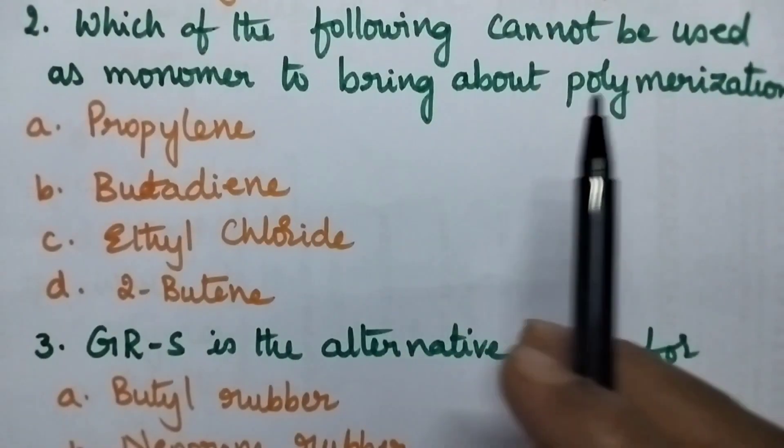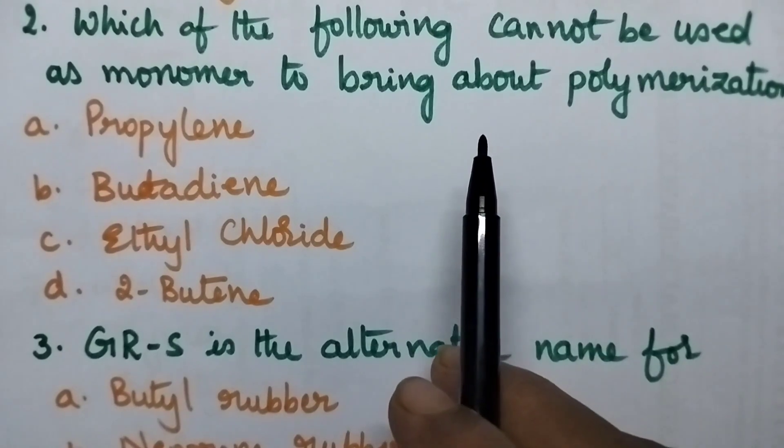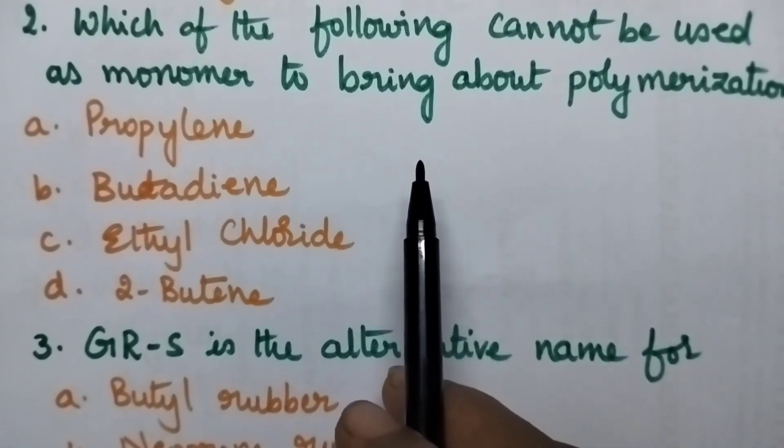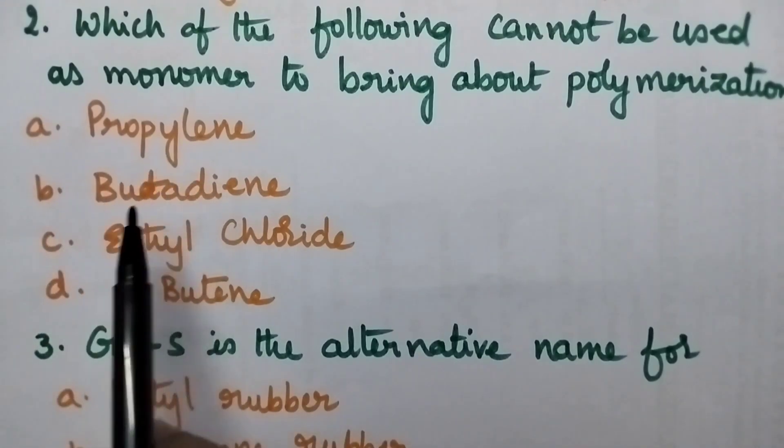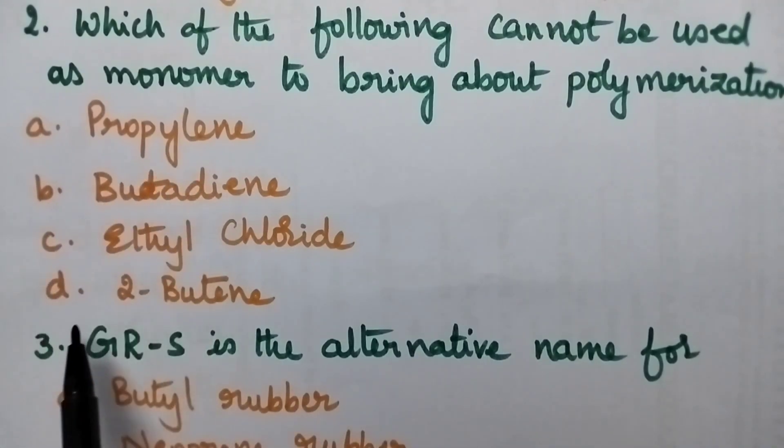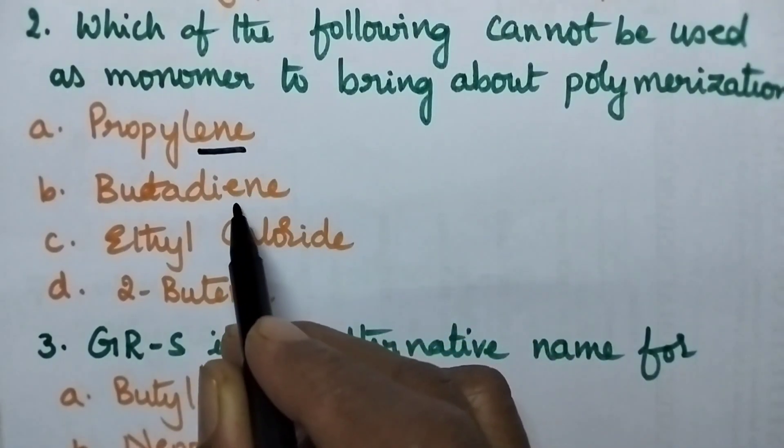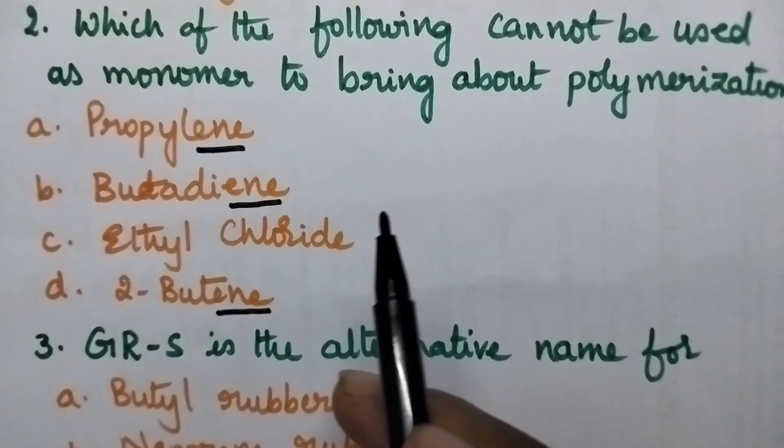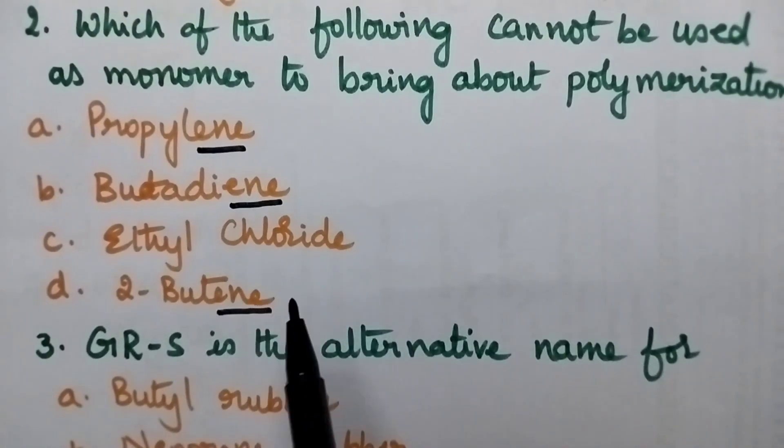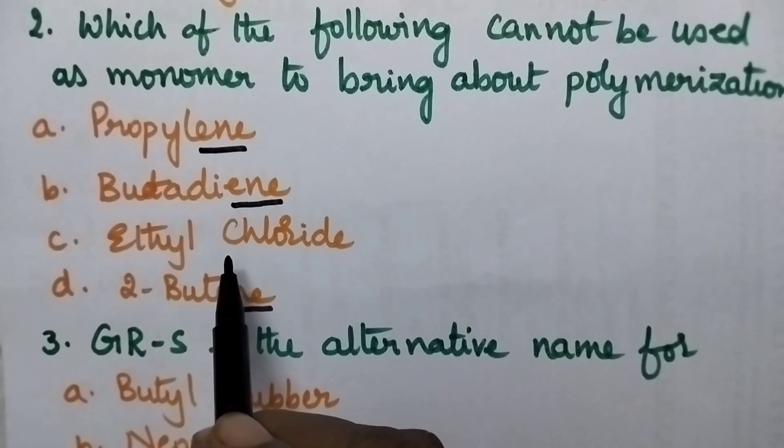Which of the following cannot be used as monomer to bring about polymerization? So in order to bring polymerization reaction, a monomer is supposed to contain at least one double bond or two add to functional groups. So option A. Propylene, B. Butadiene, C. Ethyl chloride and D. Ease 2-butene. Propylene means whenever a compound name is ending with ene, definitely it contains a double bond. So here we have to identify the monomer which cannot be used as the monomer. So option C. Ethyl chloride is the right option.